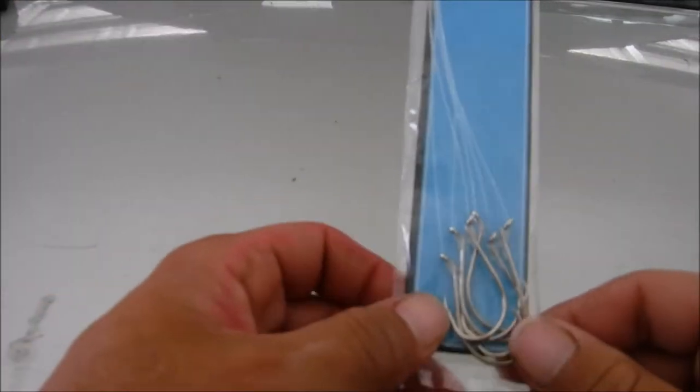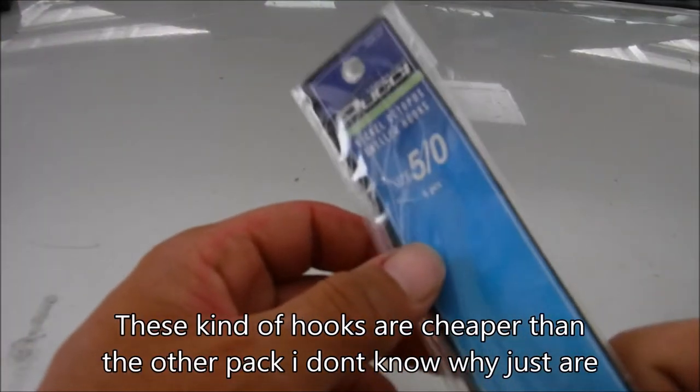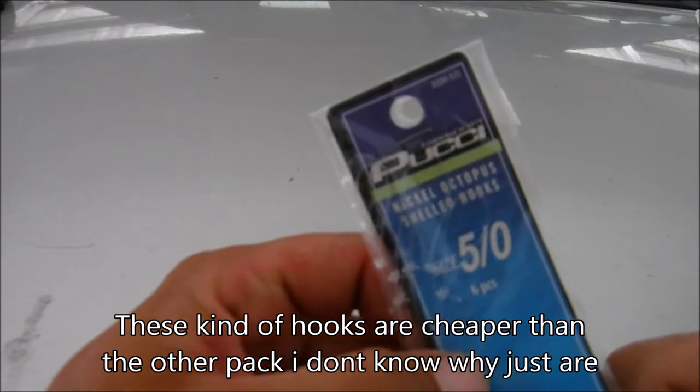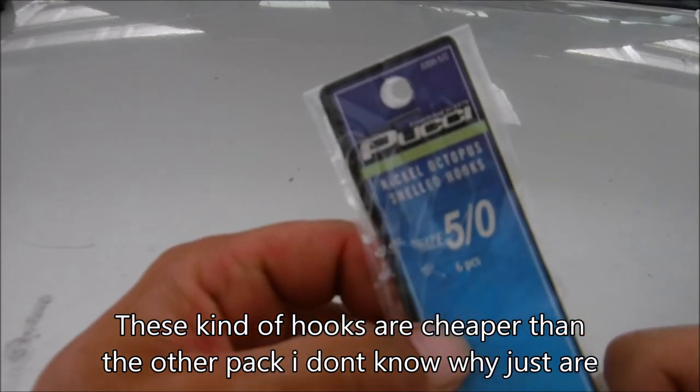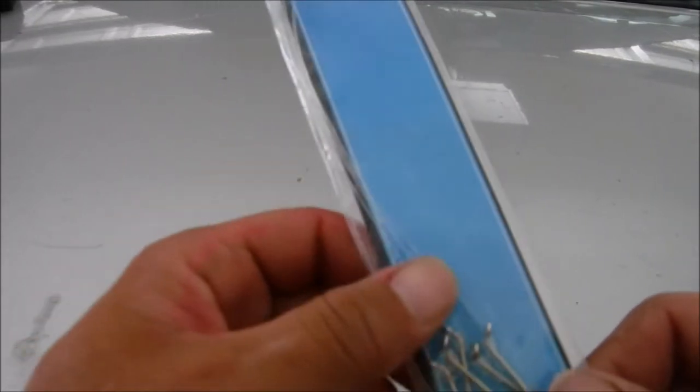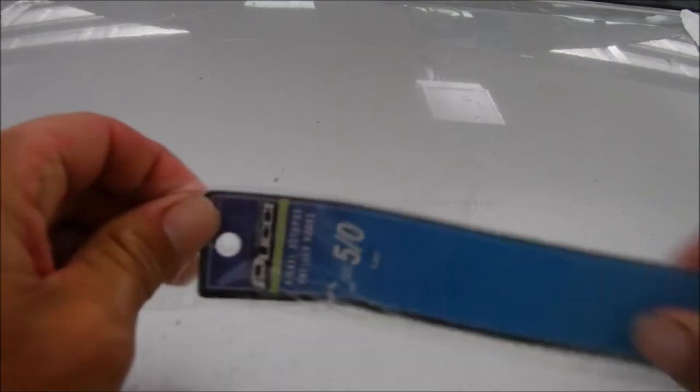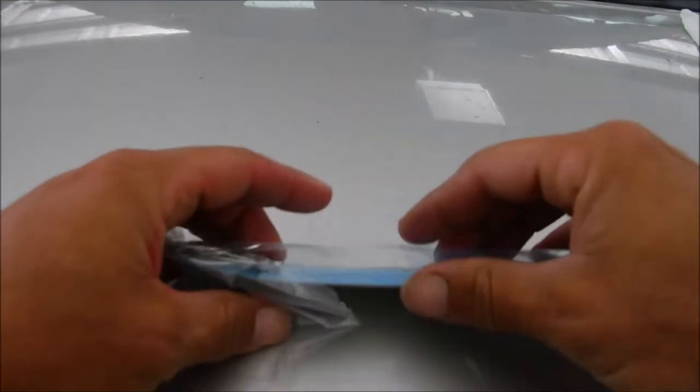Alright guys, I'm going to show you how to save a little bit of money on hooks. I got this pack for 50 cents, I think it was 99 cents on clearance. Five odd looking circle hooks or octopus hooks. I like to use a lot of these for my baby fish and for stripers and catfish. We're going to go ahead and rip that bad boy open.